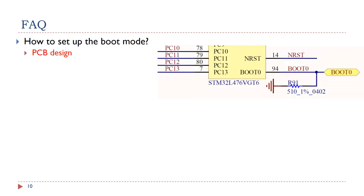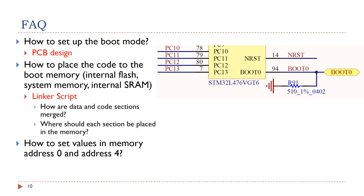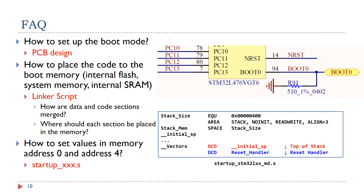Here we answer three frequently asked questions. First, how to set up the boot mode: the boot mode is determined by the PCB design, not by the processor. For the STM32L4 discovery kit, the default boot memory is the internal flash because pin boot 0 is connected to the ground. Second, how to place code to the boot memory: when the linker combines object and library files into a single executable, a linker script provides two critical types of instructions regarding how data and code sections are merged and where each section should be placed in memory. Programmers can modify the linker script to place the code in the target boot memory. Third, how to set values stored at memory address 0 and 4: the short answer is the startup code, such as the startup assembly file. For example, the STM32 startup assembly file defines the stack size, the stack pointer's initial value, and the program counter's initial value.